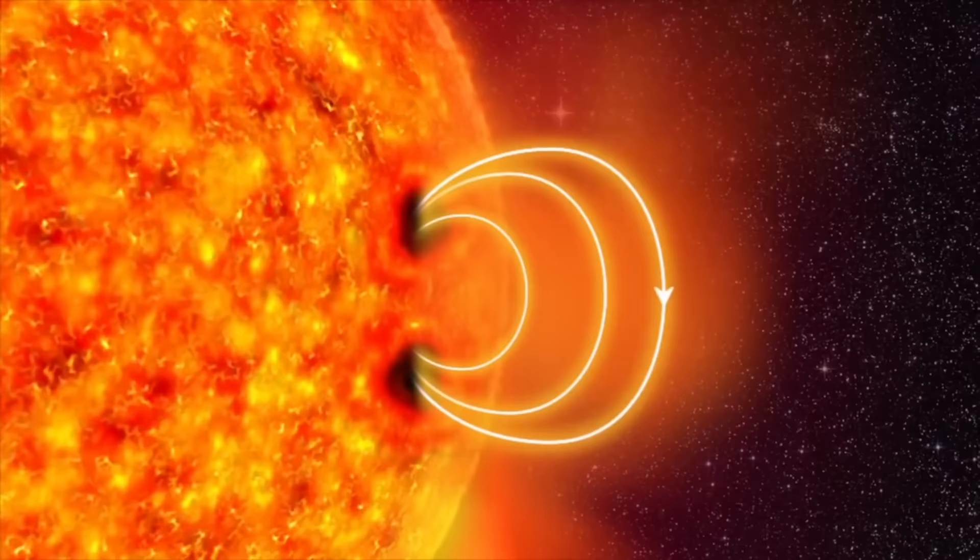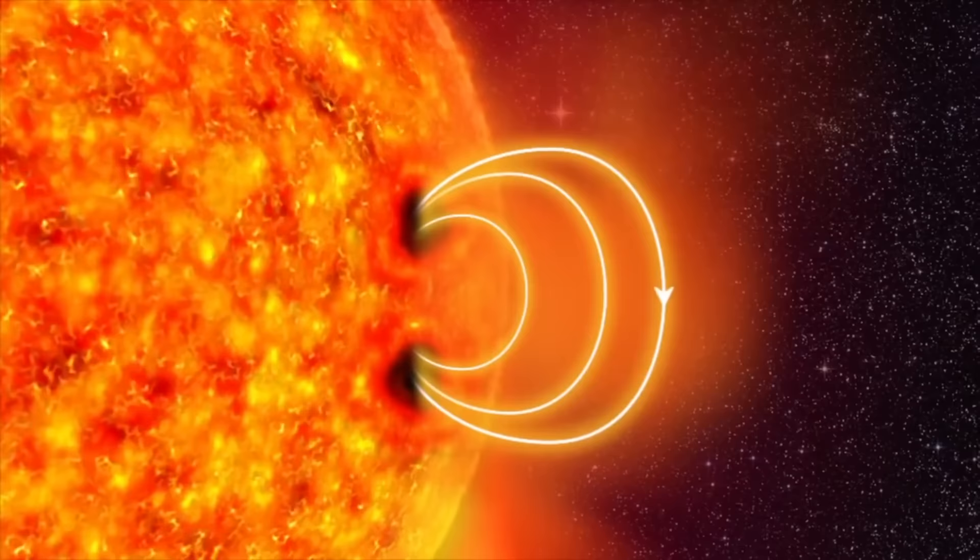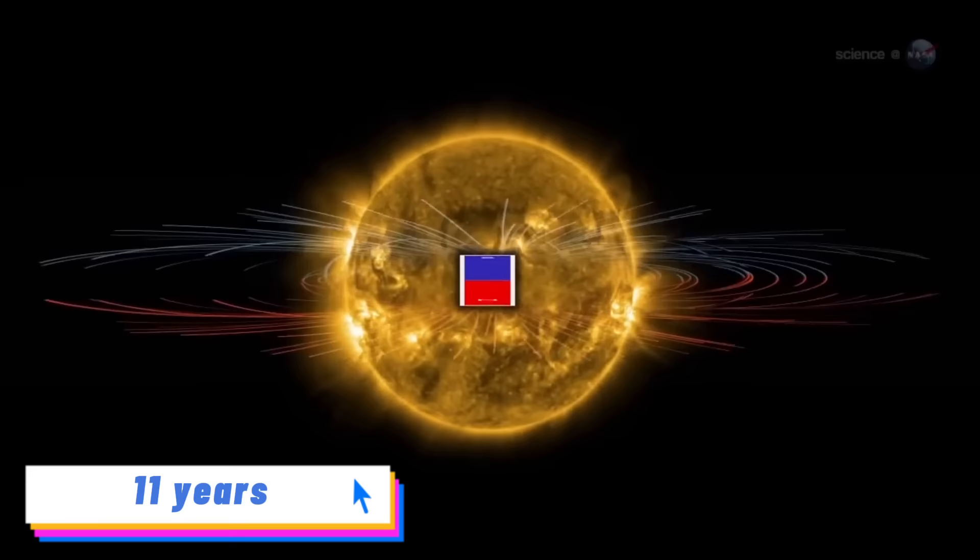The sun is a huge ball of electrically charged hot gas that moves, generating a powerful magnetic field. This magnetic field goes through a cycle called the solar cycle. Every 11 years or so, the sun's magnetic field completely flips, meaning the sun's north and south poles switch places.